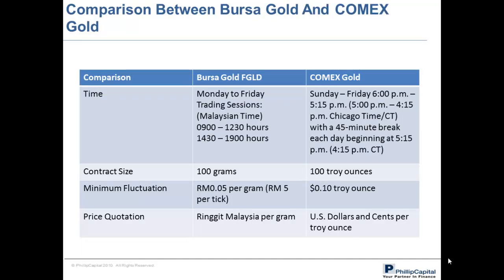Here we compare the difference between the Bursa Malaysia gold futures contract and the COMEX gold futures contract traded on the Chicago Mercantile Exchange. The main difference is in their respective contract sizes. The Bursa Malaysia gold futures contract has a contract size of 100 grams, while the COMEX gold futures contract is much larger with a size of 100 ounces per contract. The Bursa gold futures contract is denominated in Ringgit Malaysia while COMEX gold is denominated in US dollars, enabling local investors to minimize currency risk. All in all, the Bursa Malaysia gold futures contract gives investors another option to gain exposure in the gold market with a smaller, Ringgit-denominated contract. Volume and open interest of this contract have been on the rise since inception, and its smaller contract size will provide more liquidity and flexibility to traders and investors.